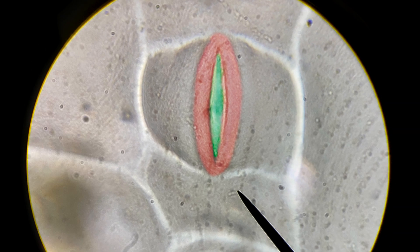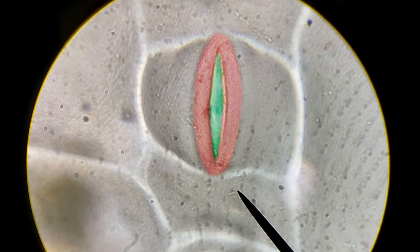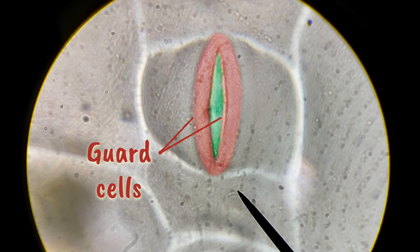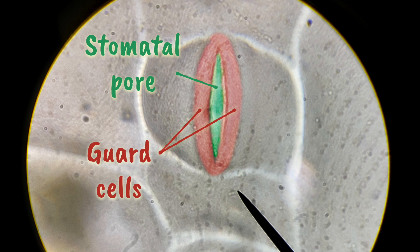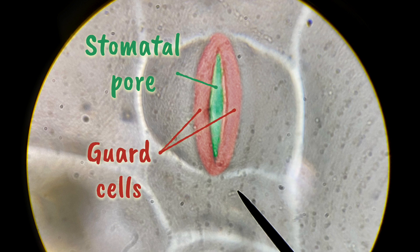Some scientists use the word stoma to describe this whole structure we see here, including the guard cells, while others use stoma to describe only the space in between them, the bit shown here in green. The phrase stomatal pore is therefore quite helpful since this phrase only refers very specifically to the space between the guard cells.